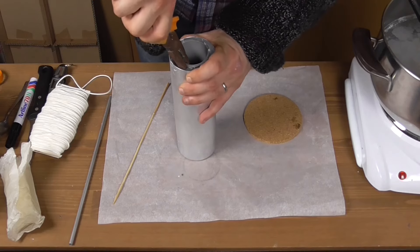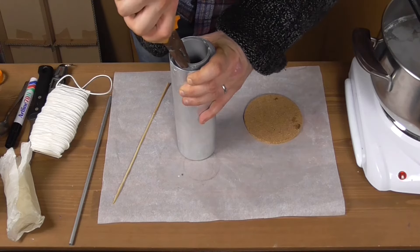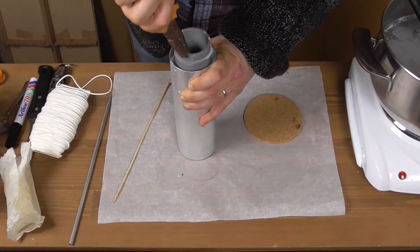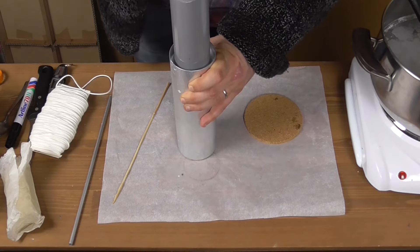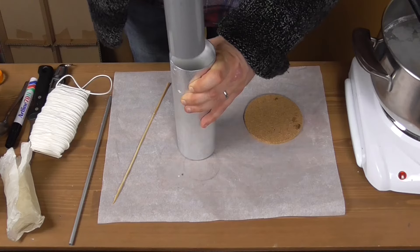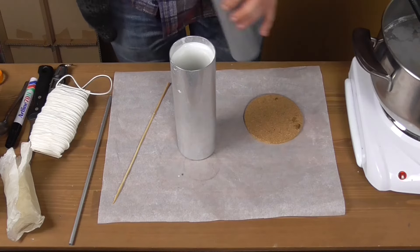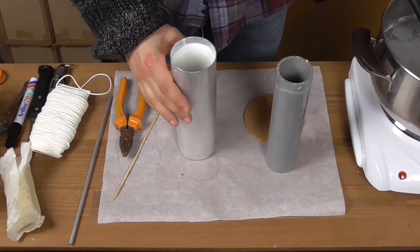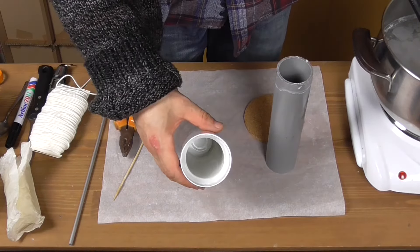When it's set, use a pair of pliers and remove the insert, first rotating it slightly and then pulling it up. It should come out without any problem. And there you've got it, the perfect wax shell.